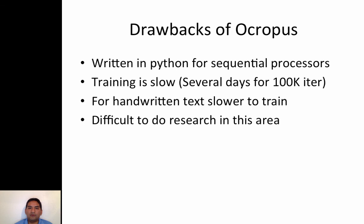One drawback of this model is that it's implemented in Python and is very slow to train. It's also difficult to do research in this area because trying different units — such as GRU or other LSTM variants — requires manually calculating derivatives and doing debugging, which can be very tedious.